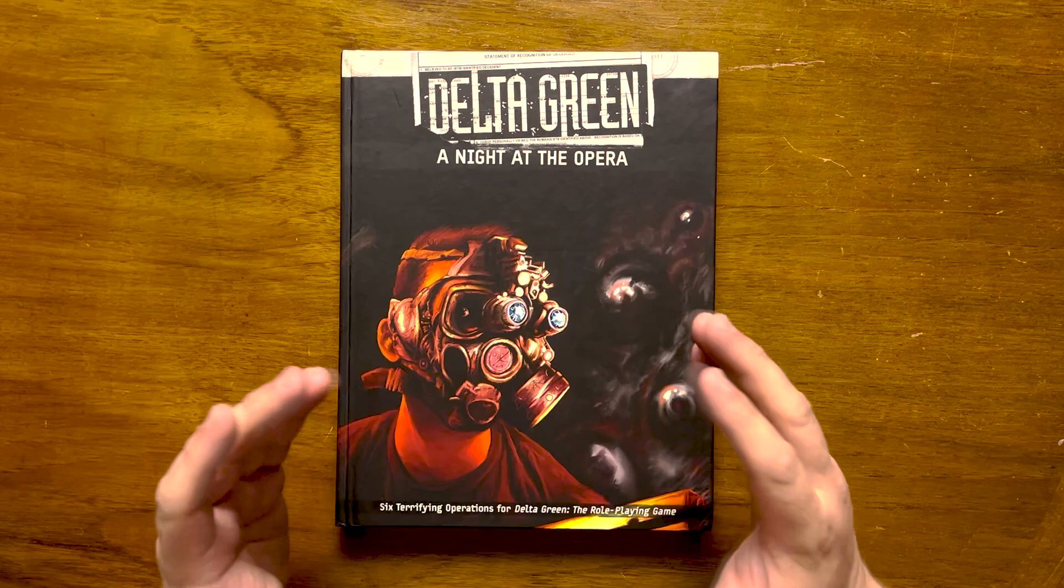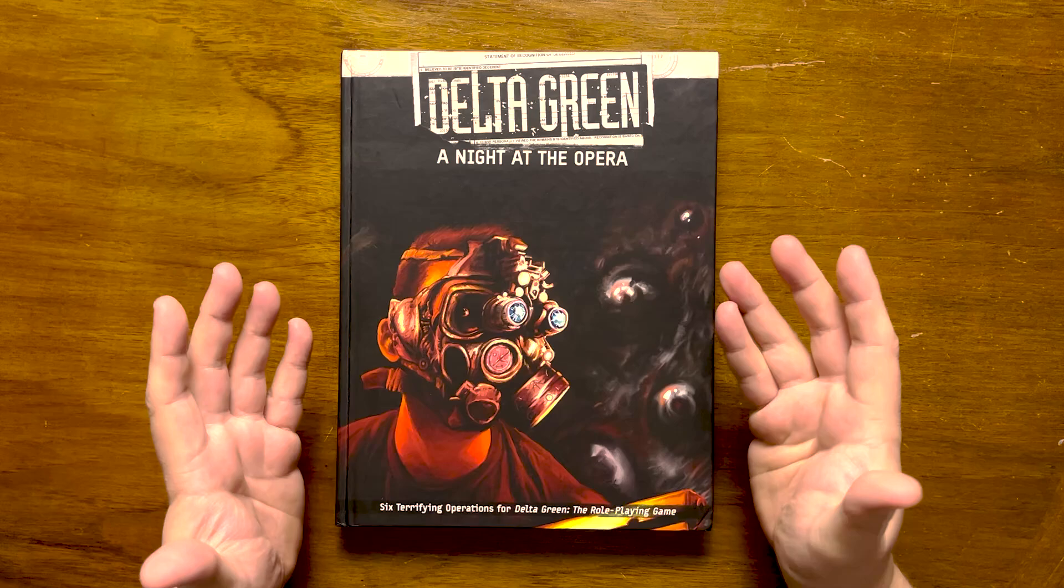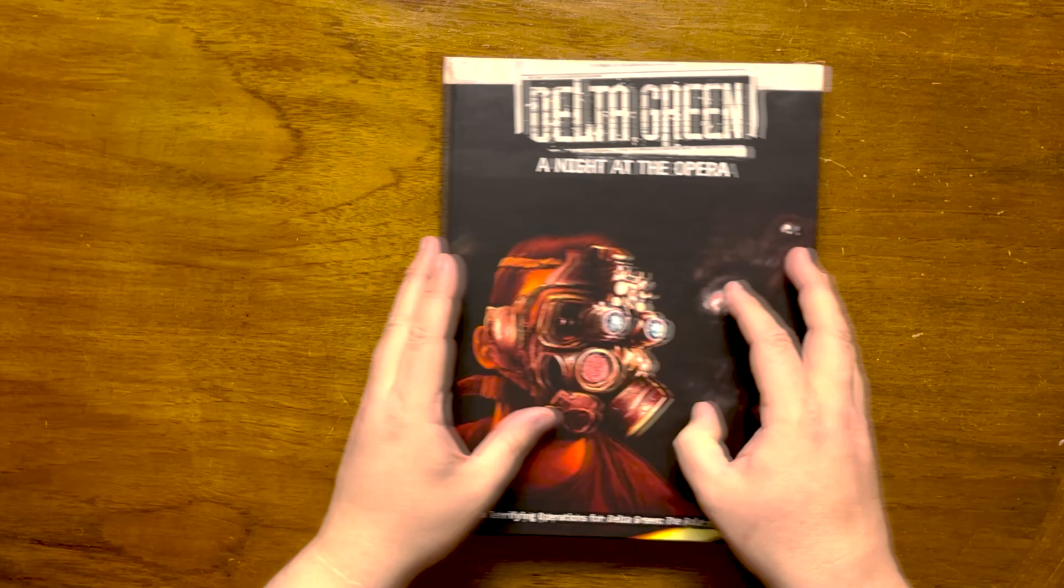Okay, first a bit of history. Viscid was the first stretch goal achieved in 2015's successful Delta Green Kickstarter. It was released as a PDF and print on demand in early 2018 and then later in A Night at the Opera and is designed to be played over two to three sessions.